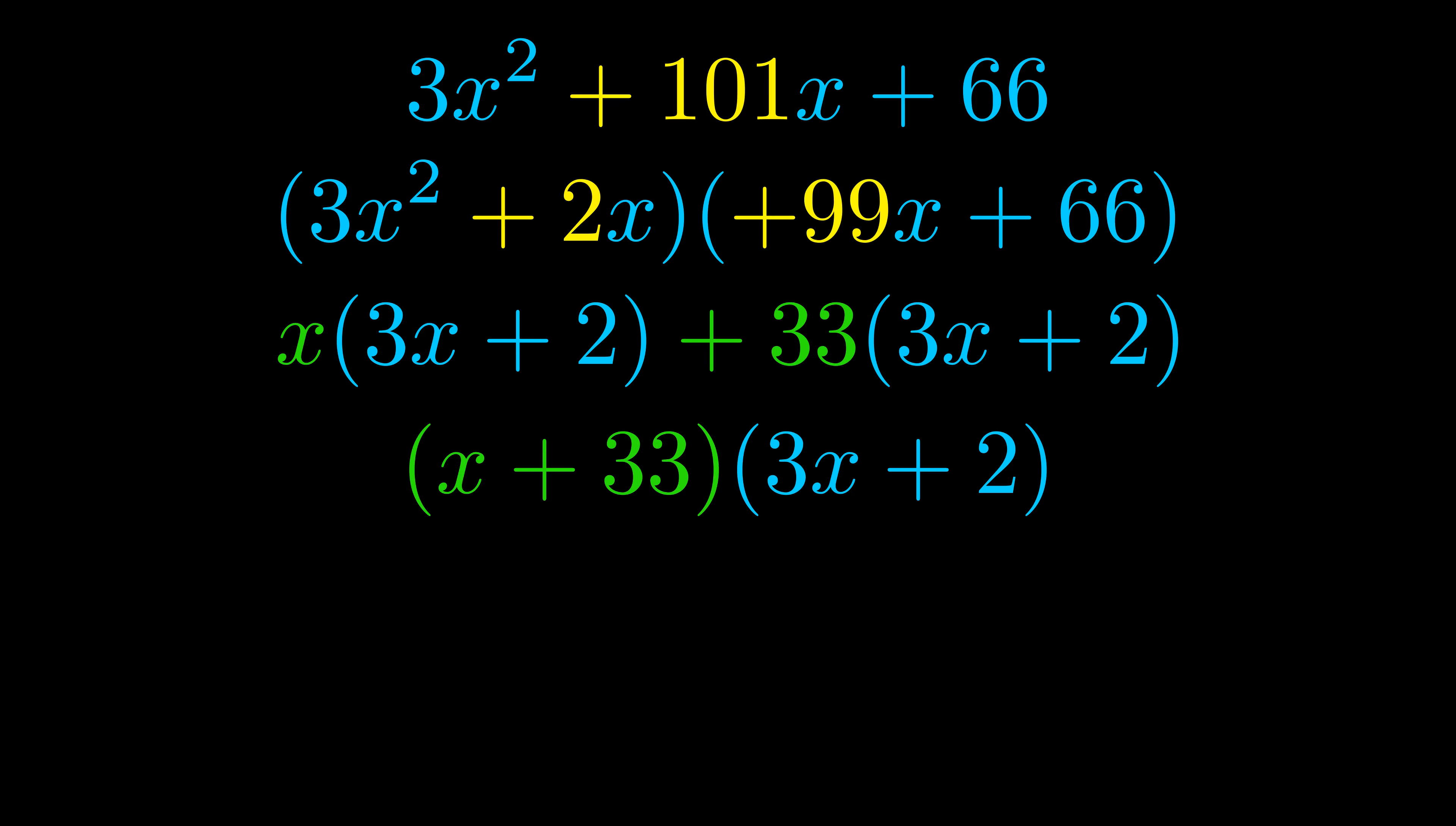Notice also how what remains inside of the parentheses is the same in both cases. The blue values are the same. Those blue values will become one of our factors, and we will combine the two green values, the GCFs that we pulled out, to get the other one. And that is our fully factored equation.